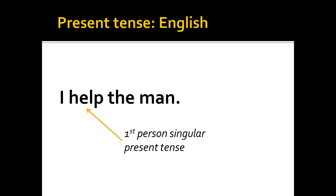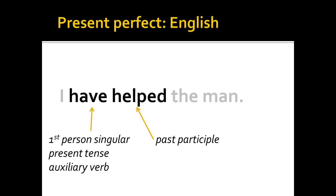The sentence on the screen is in the present tense. It reports on an action that's happening right now: I help the man. We have the subject I, first person singular, and then we have subject-verb agreement — I help, help being the first person singular present tense form of the verb. Now, I can take this same sentence and change it into the present perfect tense by doing two things. First, I'm going to take the verb help and change it into a past participle: helped.